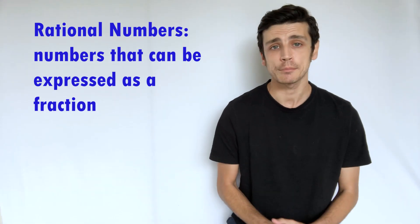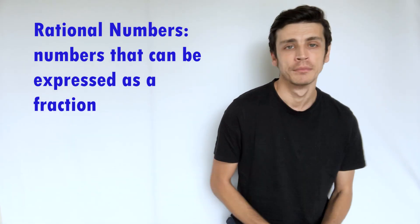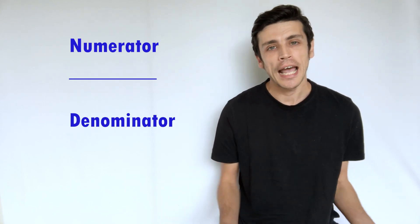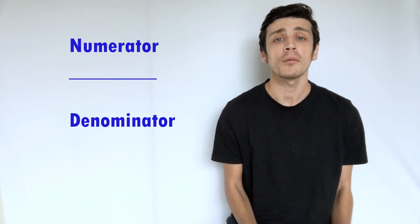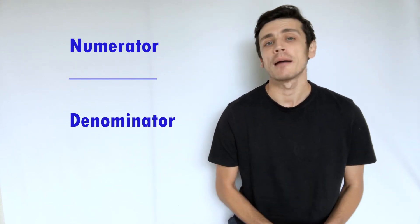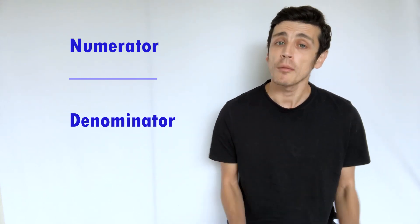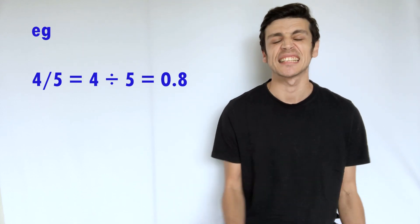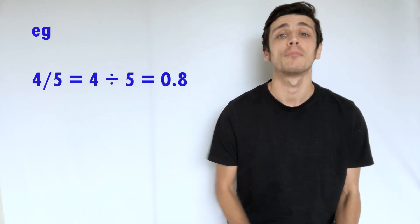So I'll start of course with our rational numbers. Now the rational numbers are just numbers that can be expressed as a fraction. Now if you're not aware, all a fraction is is just when we have a numerator, a number on the top, we have our divisible line, and then we have a number on the bottom which is our denominator, and it works basically as division, so the numerator divided by the denominator.